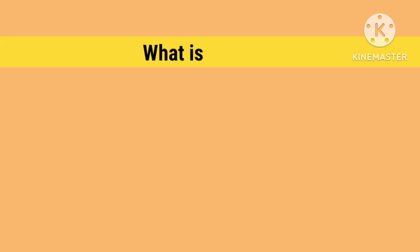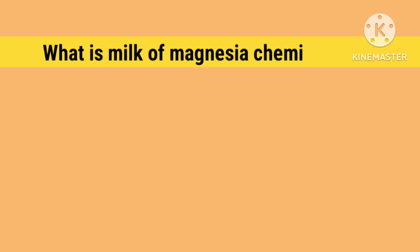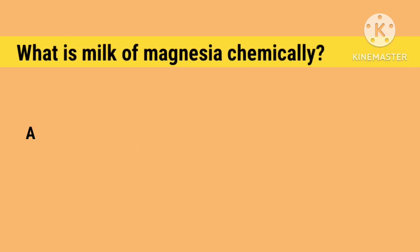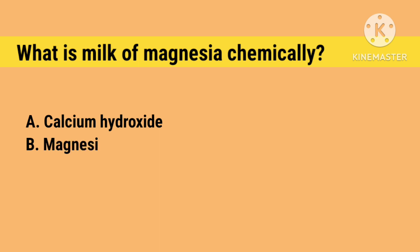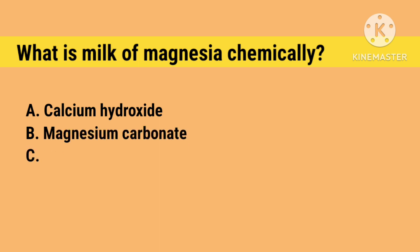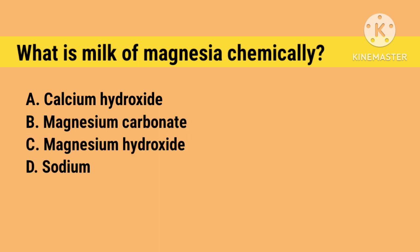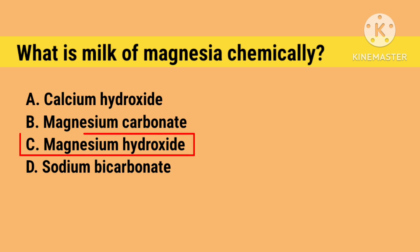What is milk of magnesia chemically? Option A. Calcium hydroxide, B. Magnesium carbonate, C. Magnesium hydroxide, D. Sodium bicarbonate. Right answer is C. Magnesium hydroxide.